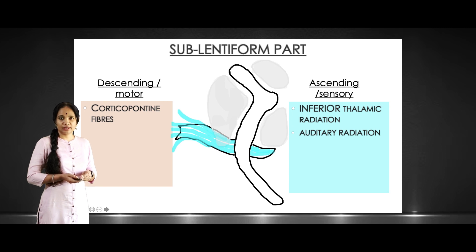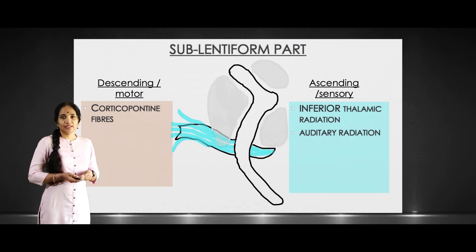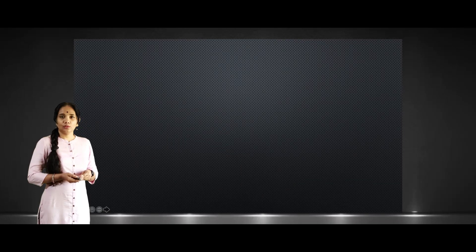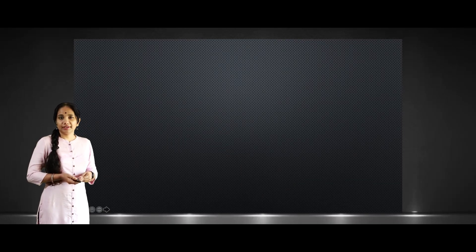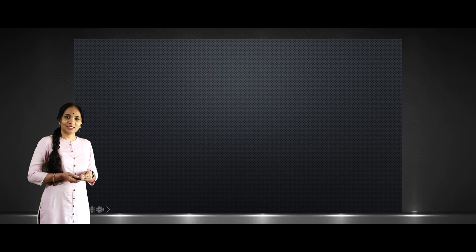So those are the fibers in the different parts of the internal capsule. In the next video we'll see the blood supply — the arterial supply — of the internal capsule. Thank you.